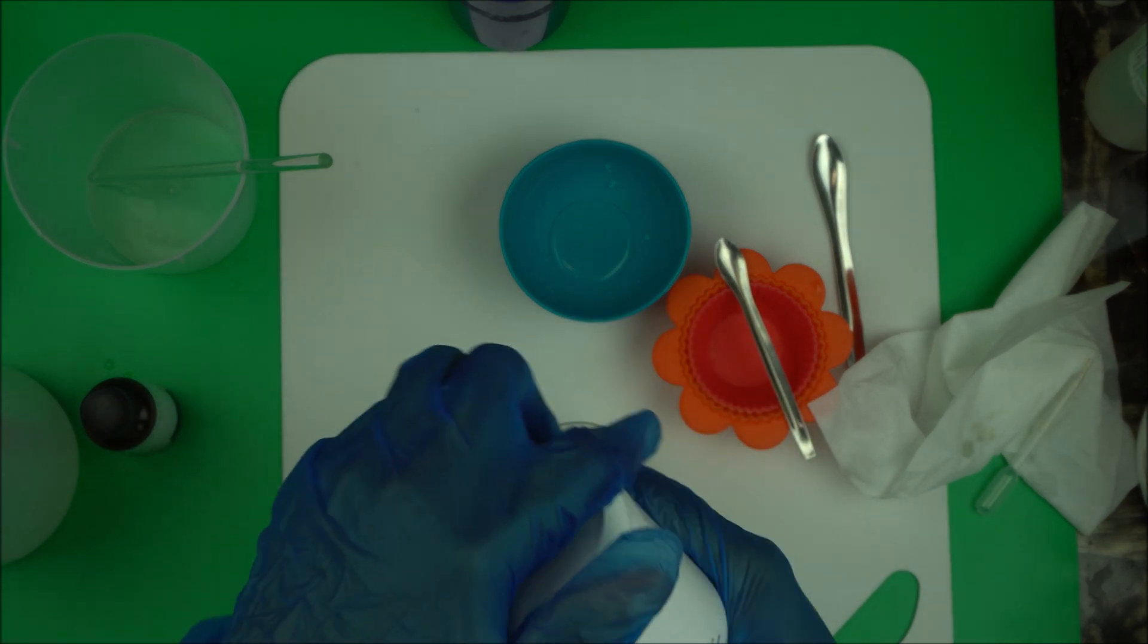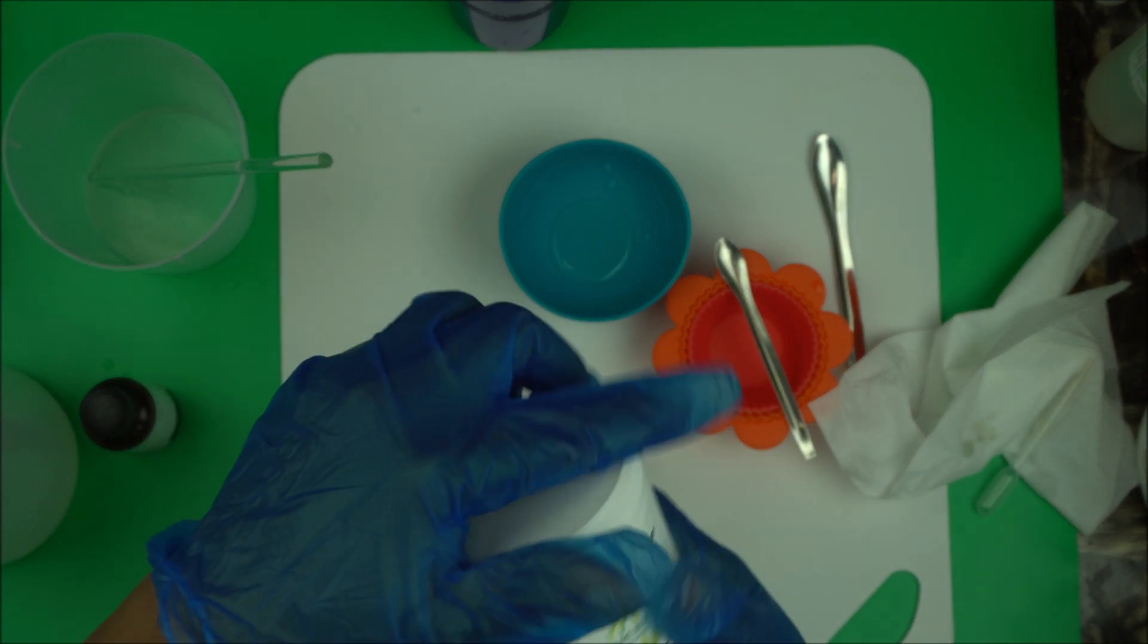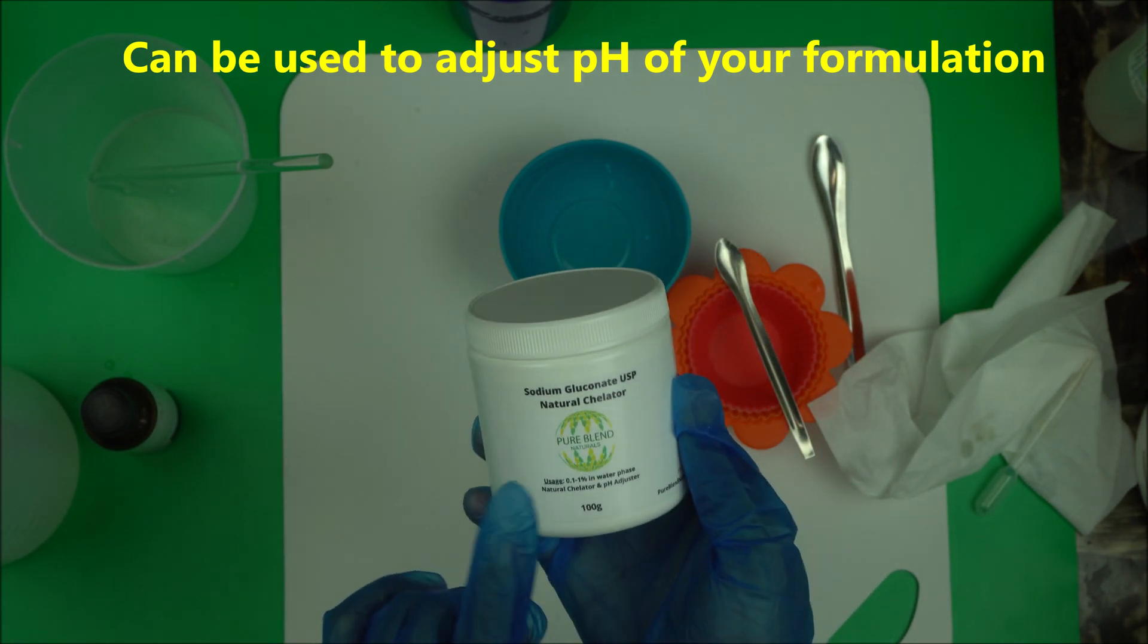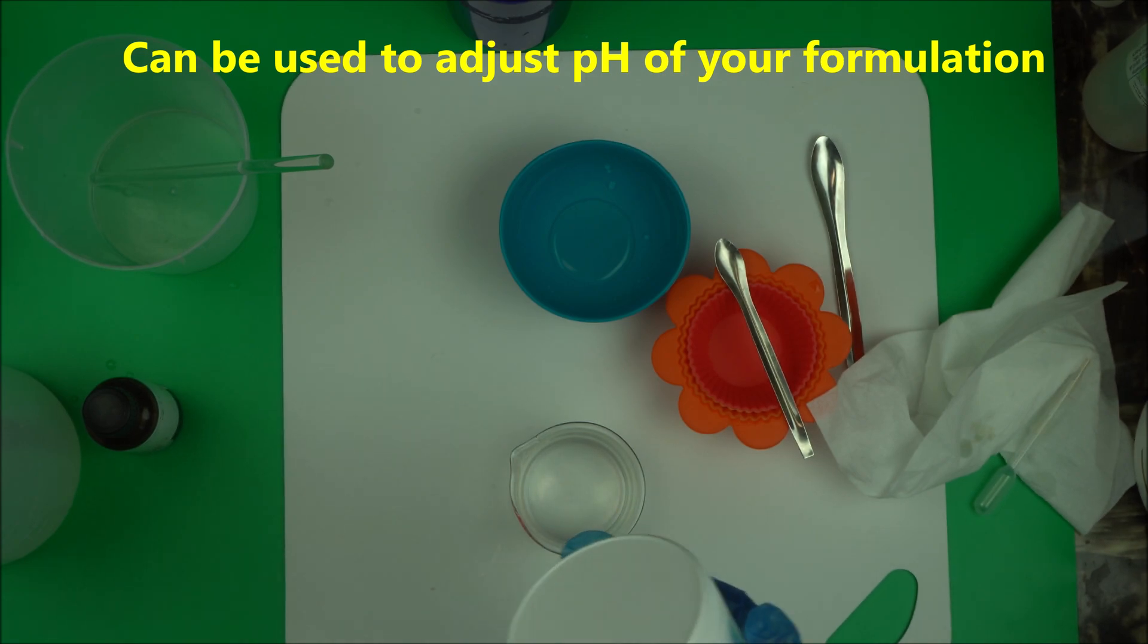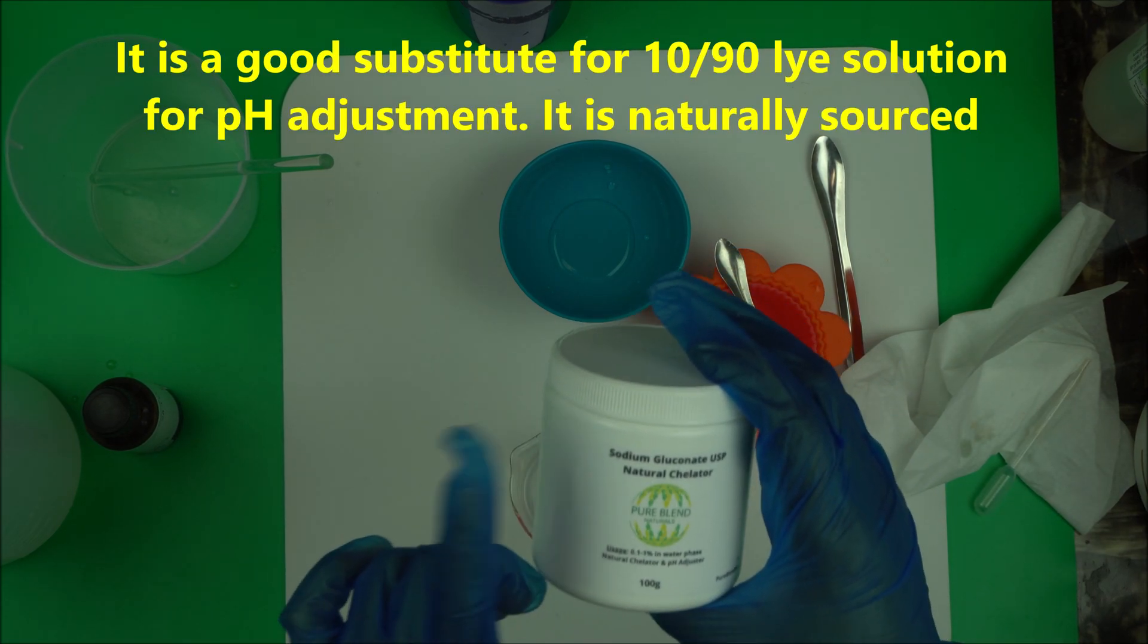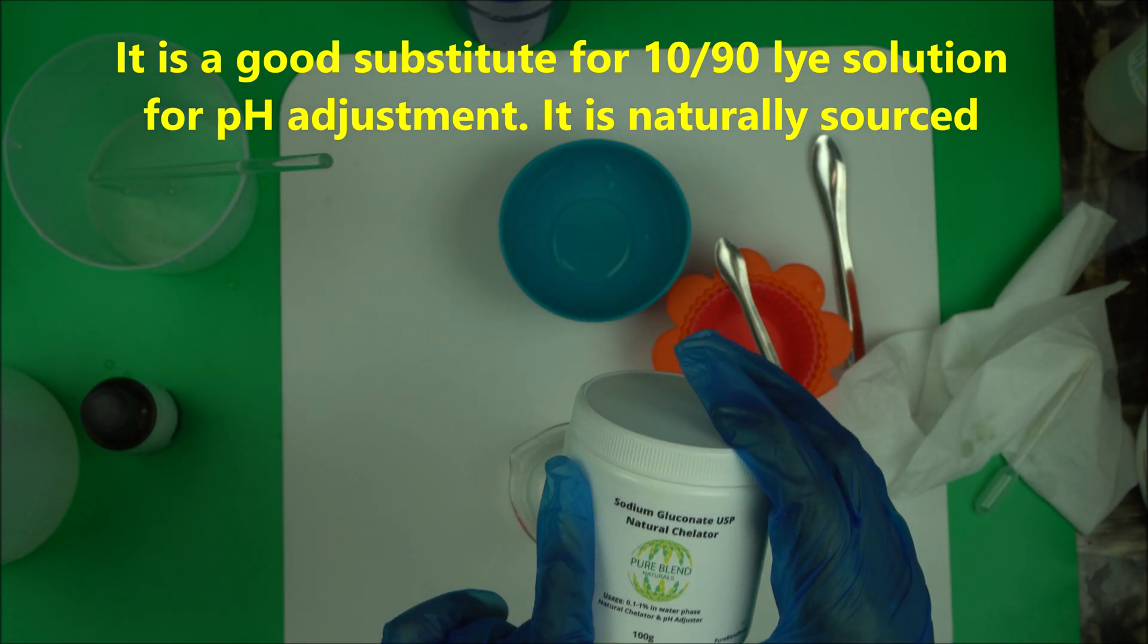Another thing we can use sodium gluconate for is to adjust pH. In my next video I'm going to show you how to use sodium gluconate to adjust the pH of your product. If you don't like 10% lye solution pH adjuster sometimes, you can also use sodium gluconate to bump up the pH of your product.